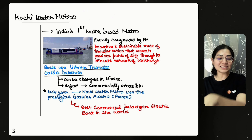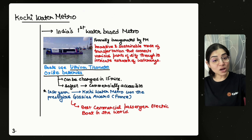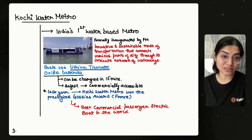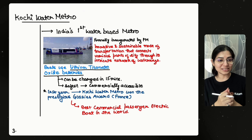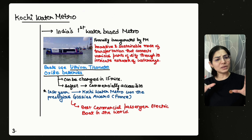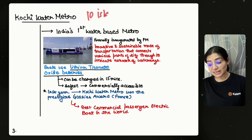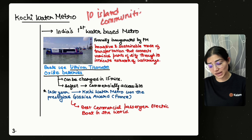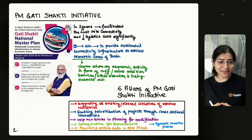Kochi Water Metro is important from both Indian economy and science and technology perspectives. It is an integrated ferry water system launched in the greater Kochi region, and it will connect Kochi's 10 island communities. This shows how much the government is working on last-mile connectivity, whether it is Kochi Water Metro or the PM Gati Shakti Initiative.